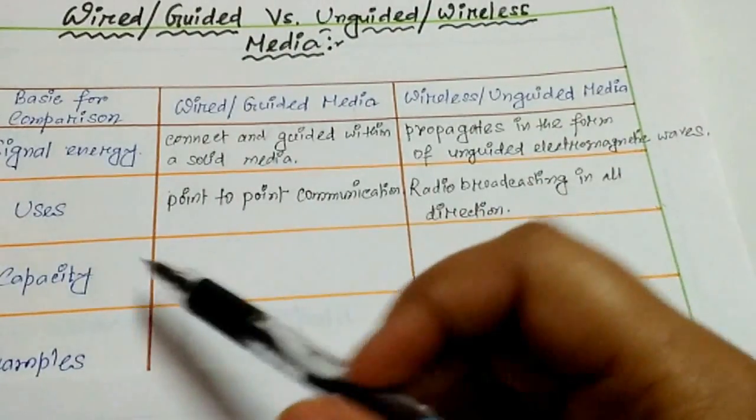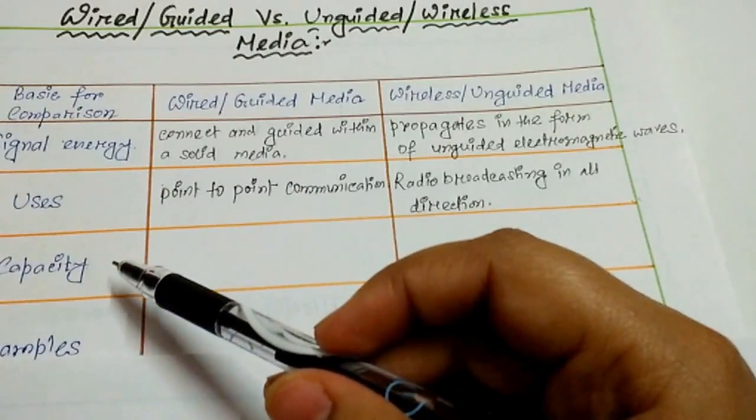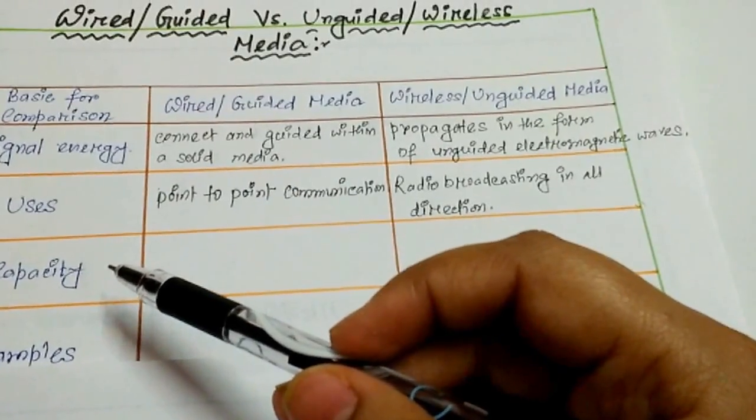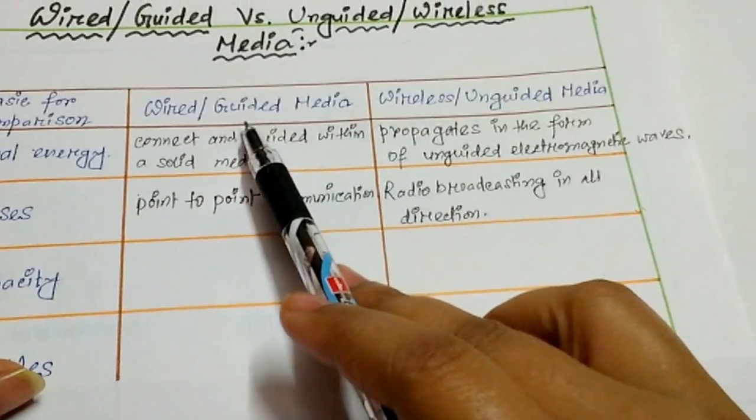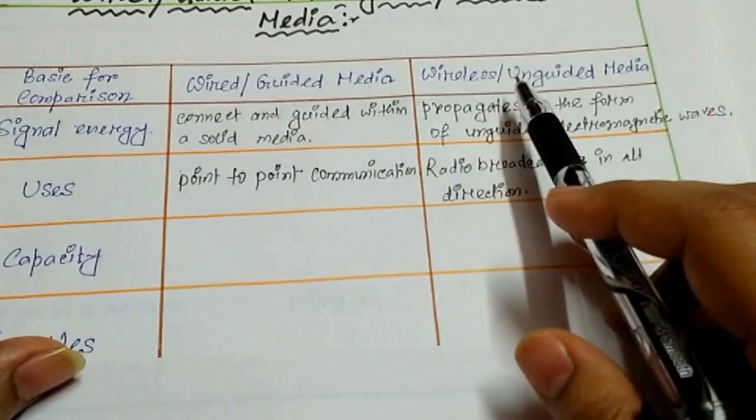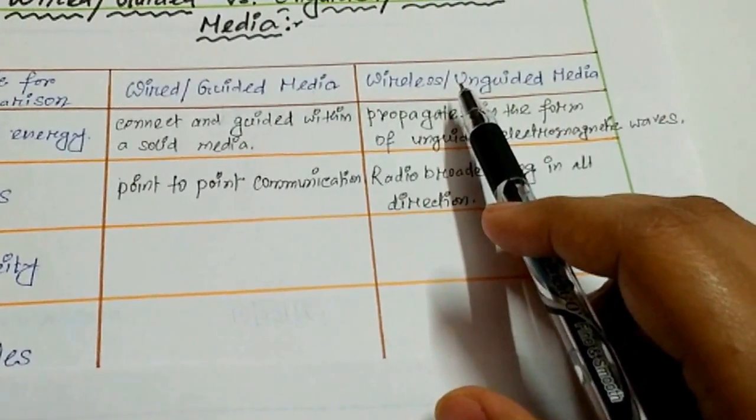Now the third point is capacity. Additional transmission capacity can be produced by adding wires for wired media, but in wireless media it is not possible to enhance additional capacity.